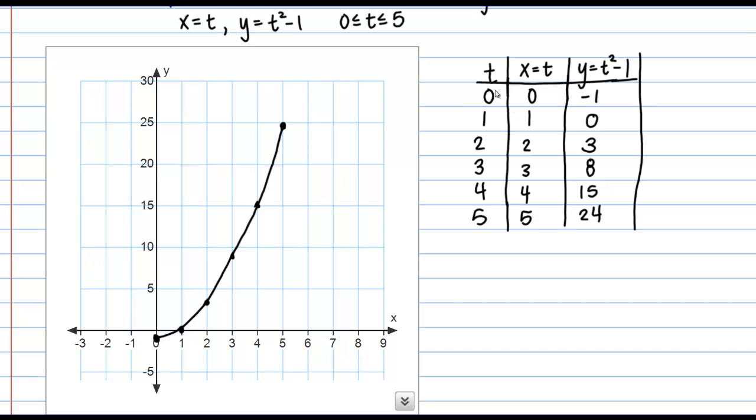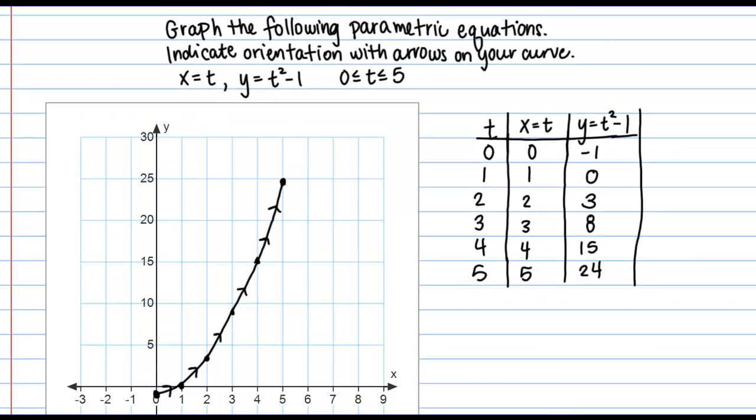So what that means basically is I just think about where I'm starting with my t values. So, I started here at this point, 0, negative 1. And then as t increases, my curve goes in this direction. Right? In the direction that I plotted the points. So I'm just going to add in some arrows to indicate that. Okay? And this is how we show the orientation of our parametric curve.